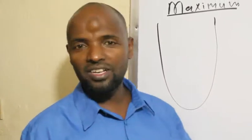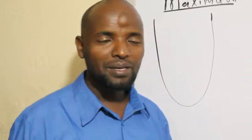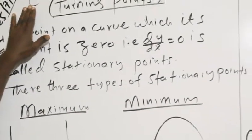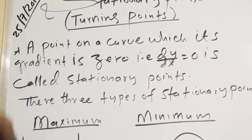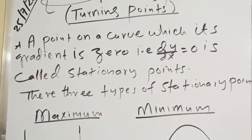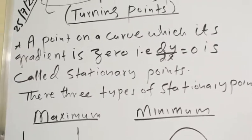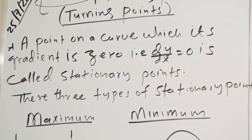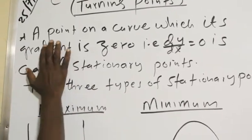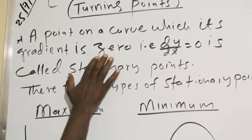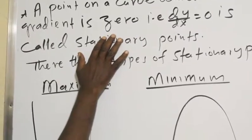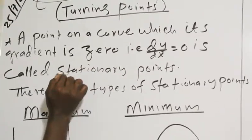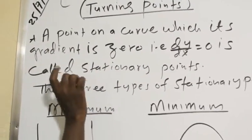What are stationary points? Stationary points are points on a curve where the gradient is zero. The key property of a stationary point is that the gradient equals zero.